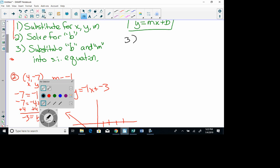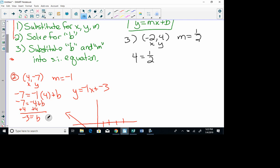And our point is negative 2, 4, and our slope is 1 half. Step 1 says substitute for x, y, and m. There's x and y. So y is 4, m is 1 half, x is negative 2. So you see, I put this in here. That's m. I put this in for y, and I put this in for x. Now, step 2 says solve it.